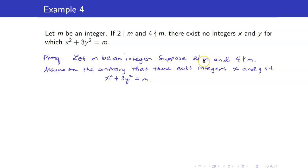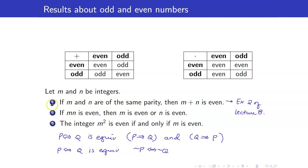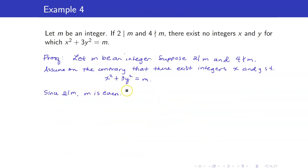Since 2 divides m, m is even, so x² + 3y² is even. By the converse of the same-parity result, x² and 3y² must have the same parity. This gives us two cases: case 1, x² and 3y² are both even; case 2, they are both odd.